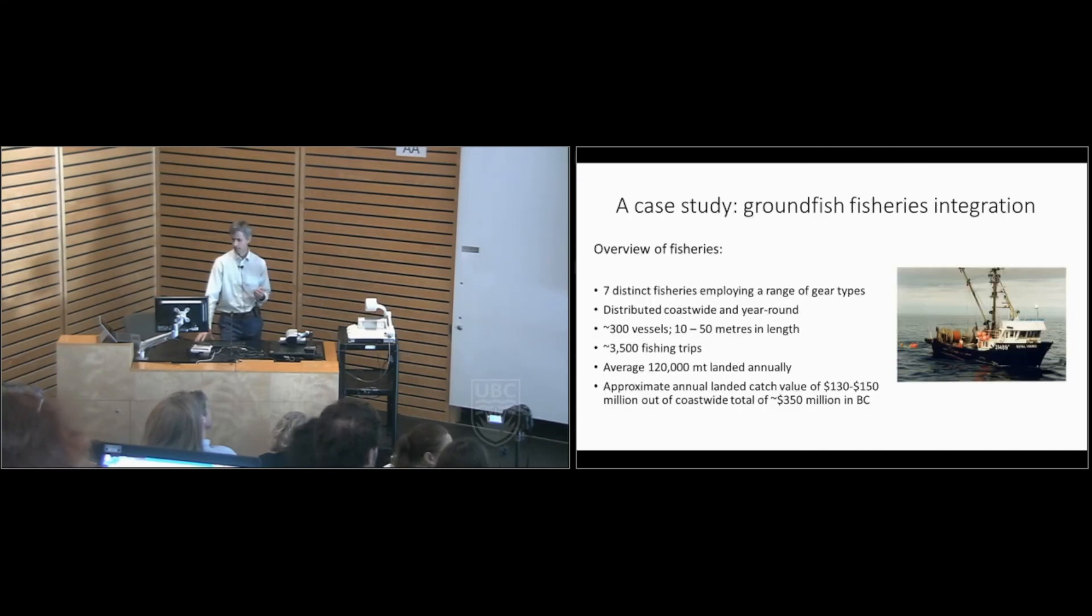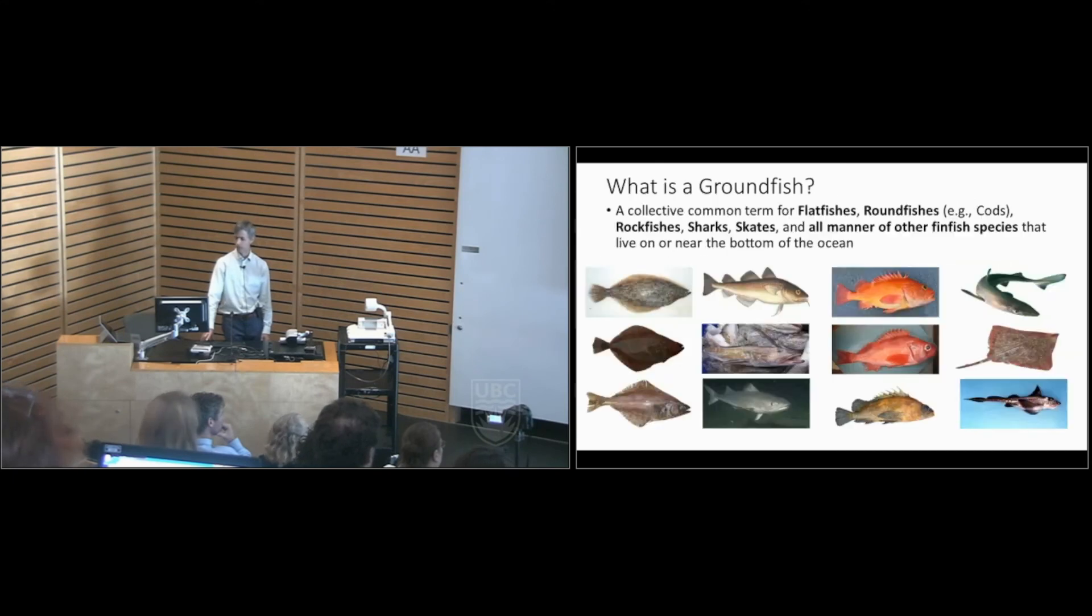The case study I'm going to talk about is groundfish fisheries integration. So this is a group of seven fairly distinct fisheries. They employ a range of gear types. They're distributed coast-wide. They fish year-round. There's about 300 unique vessels that participate in these fisheries. They land a whole bunch and they make a whole bunch of money.